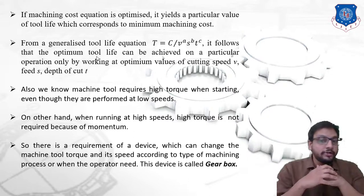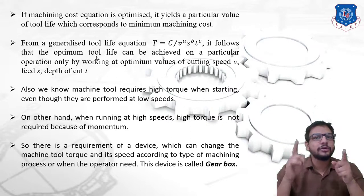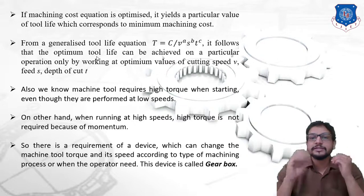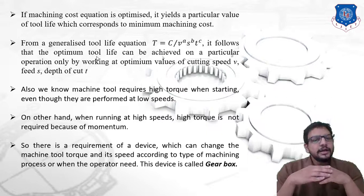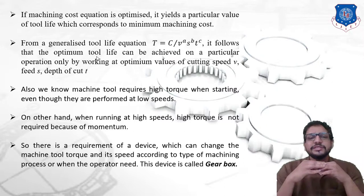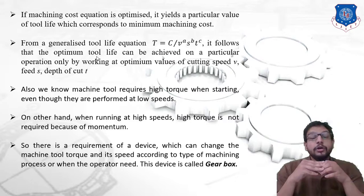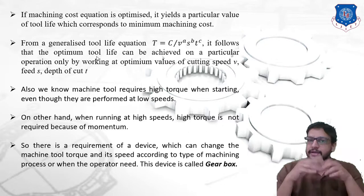When the machine tool is at rest, high torque must be provided, accomplished by lowering the speed. At high speed, high torque is not required because the momentum is already high. From this we can conclude that a device is needed which can change the machine tool torque as well as the speed according to the type of machining operation or when the operator needs it. This device is called a gearbox.